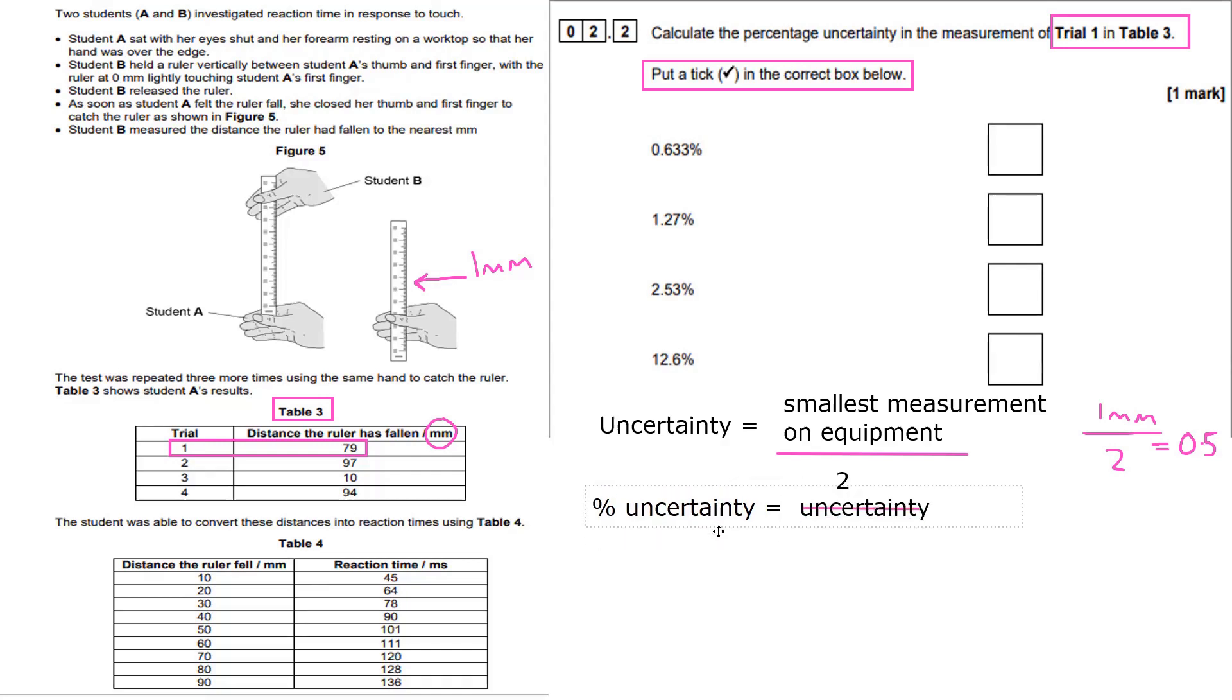That's going to change later on, I'm going to show you why that's wrong, but first of all, bear with me. So now to calculate percentage uncertainty, we have a different calculation. You've got to do the uncertainty divided by the measurement in the result. So we know the uncertainty is 0.5 because we just calculated that, and the result was 79 for trial 1, table 3.